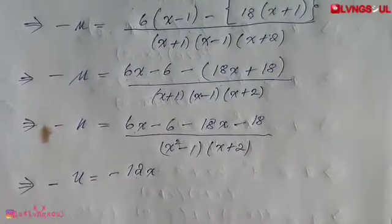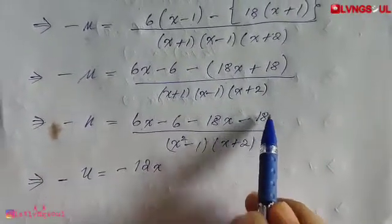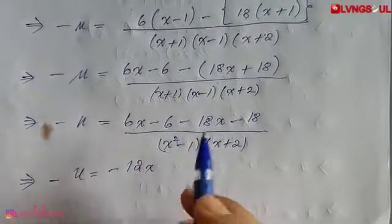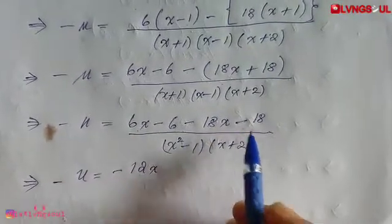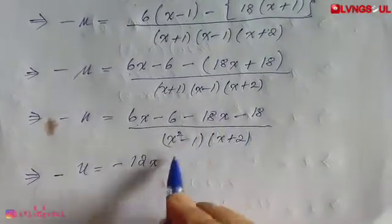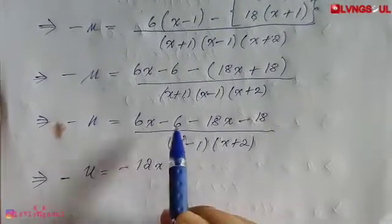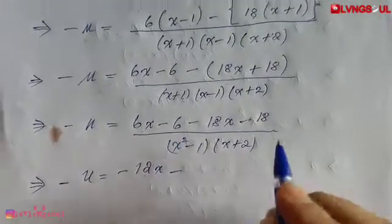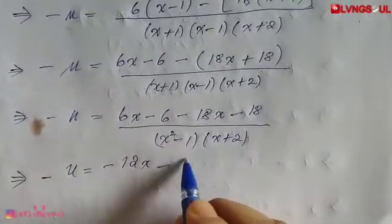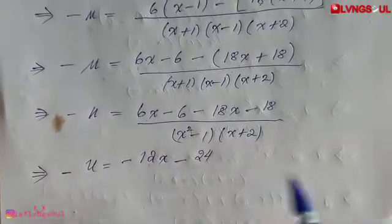Combining like terms in the numerator: 6x minus 18x gives negative 12x, and minus 6 minus 18 gives minus 24. Wait — we get minus 12x and the constant terms combine as well.